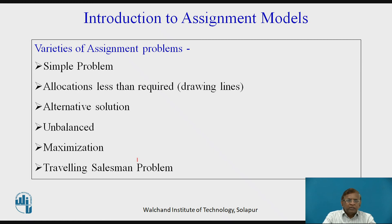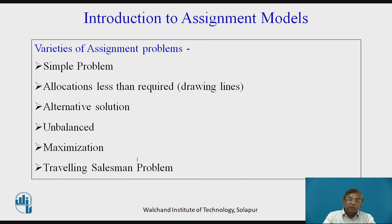A third case is alternative solutions. In a given problem, there may be more than one set of allocations — two, three, four, or multiple combinations — but the total cost in all cases must be the same. These multiple optimal solutions can be identified using the mathematical methods of assignment models.